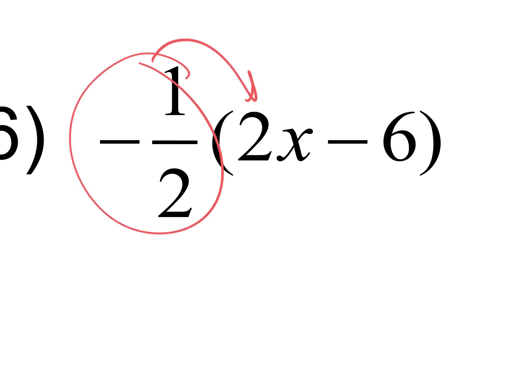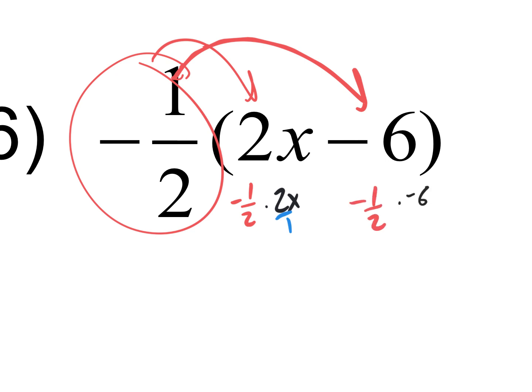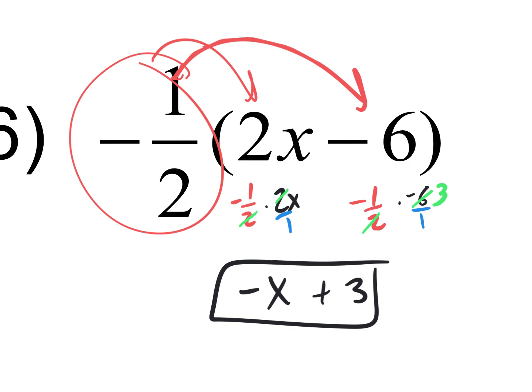Showing our work: circle the negative one half and multiply it times two x. Negative one half times two x — put that two x over one. Then negative one half times negative six — put that negative six over one. Two on top and two on the bottom cancel out, leaving negative one times x, which is negative x. For the second part, six divided by two is three, and negative one times negative three is positive three. The answer is negative x plus three.